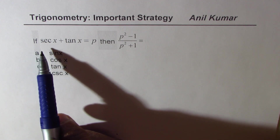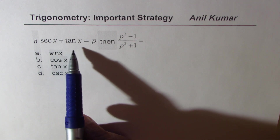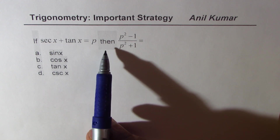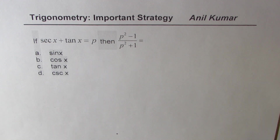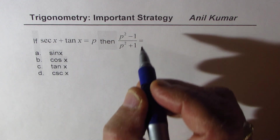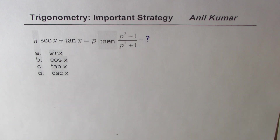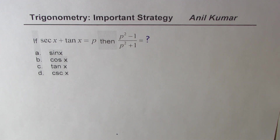If secant x plus tan x equals to p, then p squared minus 1 divided by p squared plus 1 is equal to what? Four choices are given to us: sin x, cos x, tan x, and cosecant x.